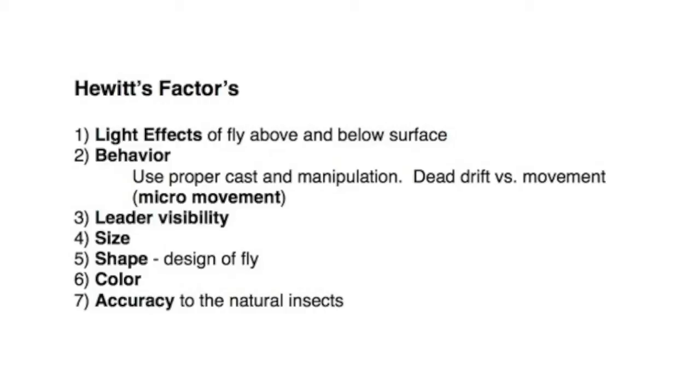When my beetle first comes in view of the trout, the light effect is that of a simple blob on the water. As it gets closer, it does have a sharp silhouette, just like the natural beetle. The natural beetle just floats with the current, so I fish my beetle dead drift.